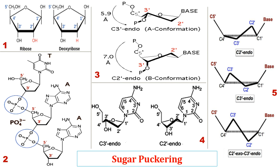Image 4 represents C3'-endo and C2'-endo sugar puckering in cytidine nucleotide conformation. In image 5, along with C2'-endo and C3'-endo sugar puckering, C2'-exo and C3'-endo sugar puckering is also evident, where C3' has moved upside and C2' has moved downside of the sugar plane.